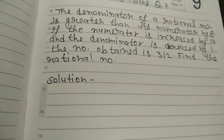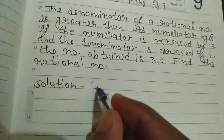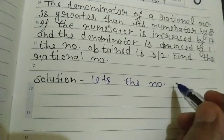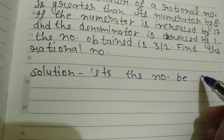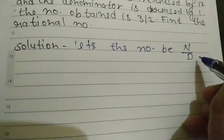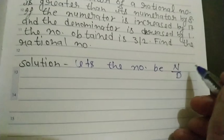Let's solve it. Let the number be N upon D. Here D is denominator and N is numerator.